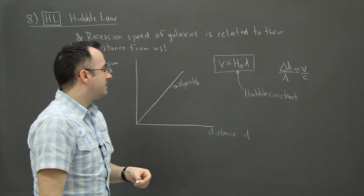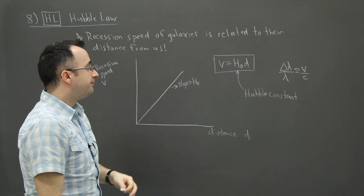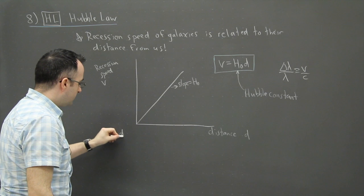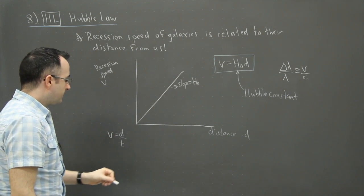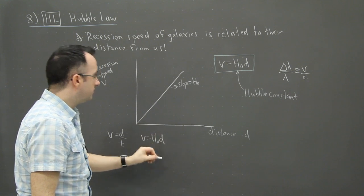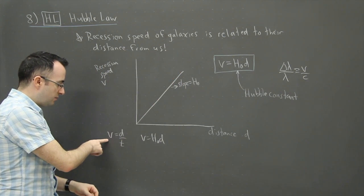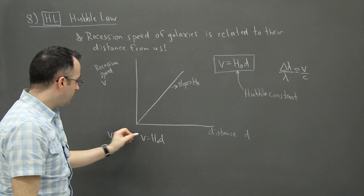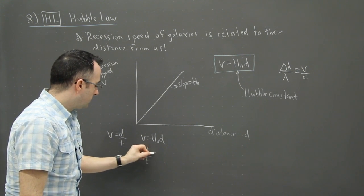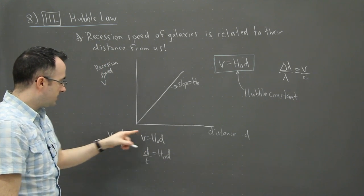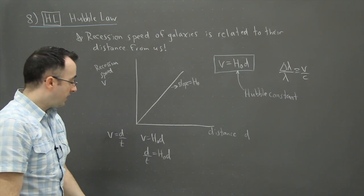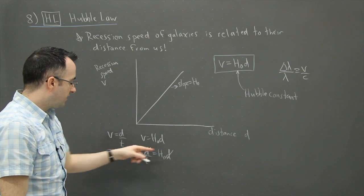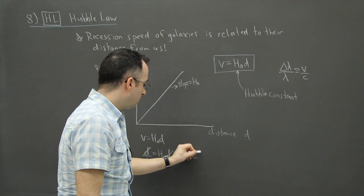The other cool thing is that assuming this is linear, we can do something else pretty neat. Since speed is also equal to distance over time, and we also said that V was equal to H zero times D, then we would have D over T equals H zero D. This D cancels out that D, and that means that one over T equals H zero, or I can flip them around and say that T equals one over H zero.